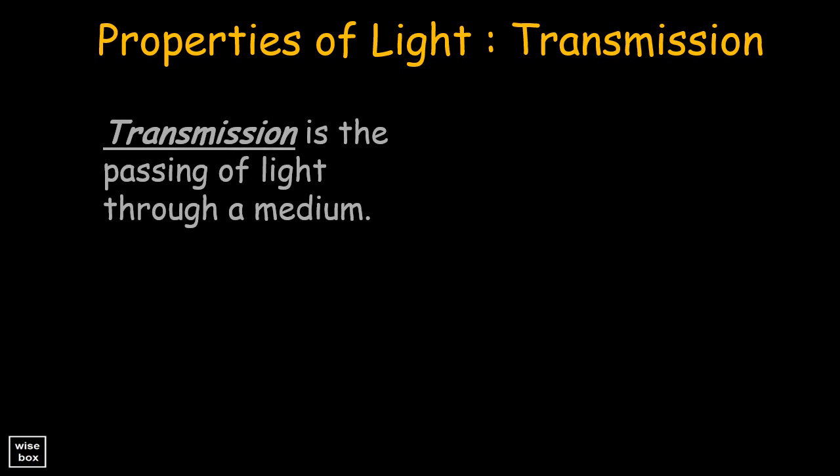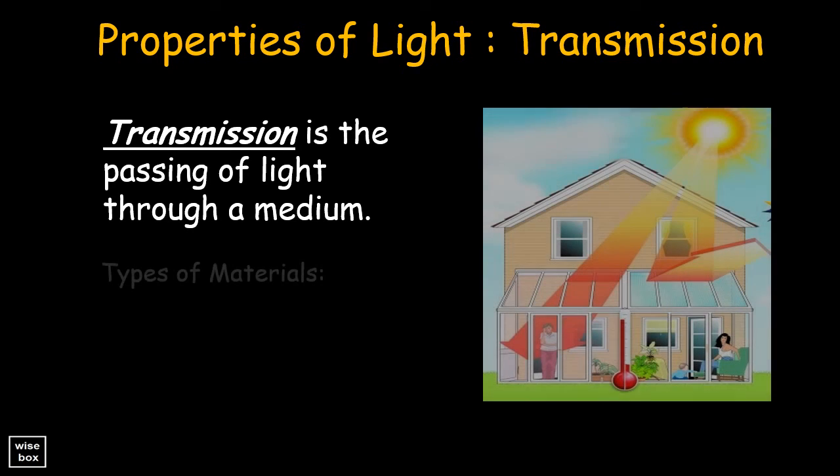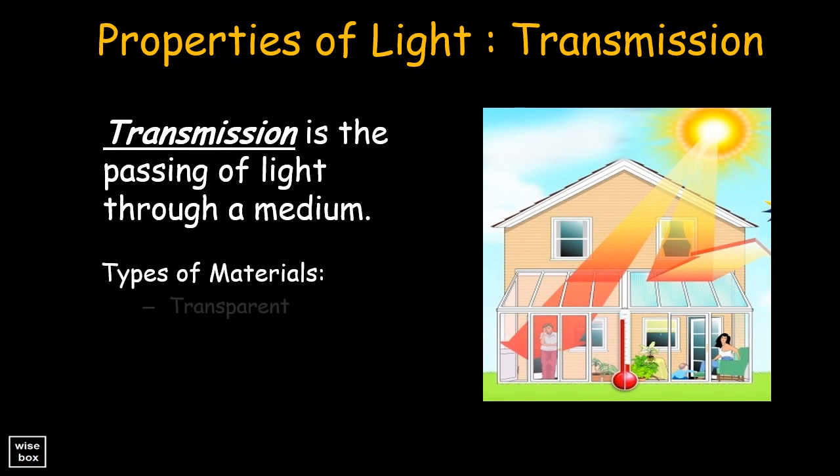Transmission is the passing of light through a medium. Transparent materials allow all light to pass through. Translucent materials allow only some light to pass. And opaque materials do not allow light to pass.